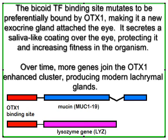The bicoid transcription factor binding site mutates to be preferentially bound by OTX1, producing a new exocrine gland attached to the eye. It secretes a saliva-like coating over the eye, protecting it and increasing fitness in the organism. Over time, more genes join the OTX1-enhanced cluster, producing modern lacrimal glands.